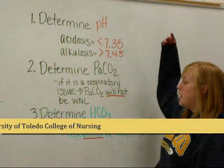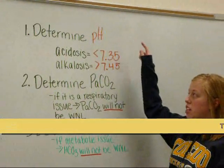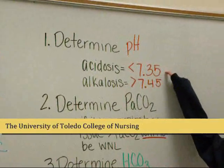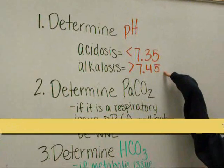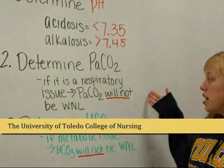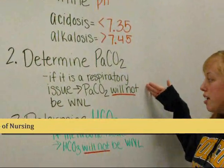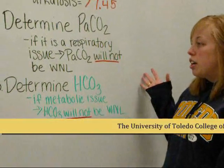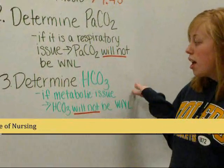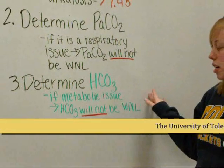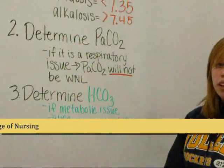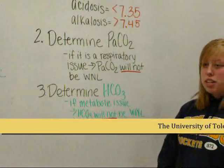The first step in reading ABGs is to look at the pH, because that determines whether it's acidotic or alkalotic. If it's less than 7.35, it's acidotic; if it's greater than 7.45, it's alkalotic. Your next step is to look at carbon dioxide — if it's outside the range of 35 to 45, it's a respiratory issue. If CO2 is normal, then look at bicarb. If bicarb is outside normal limits, that means it's a metabolic issue.